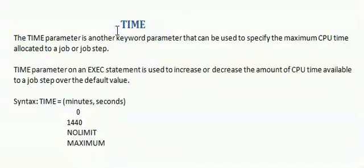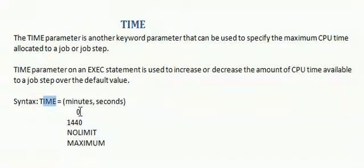The TIME parameter is another keyword parameter used to specify the maximum CPU time allocated for a job or job step. On an EXEC statement, it is used to increase or decrease the amount of CPU time available to a job step over the default value. The syntax is TIME equal to minutes, seconds, or 0, or 1440, or NOLIMIT, or MAXIMUM.